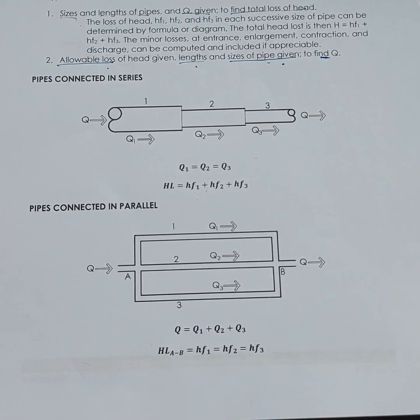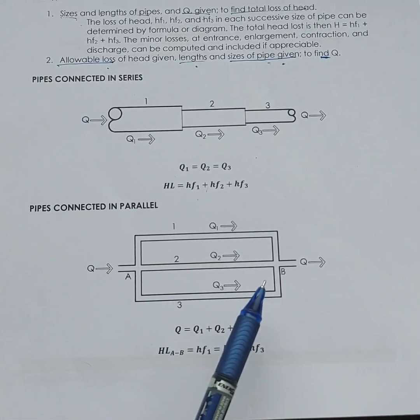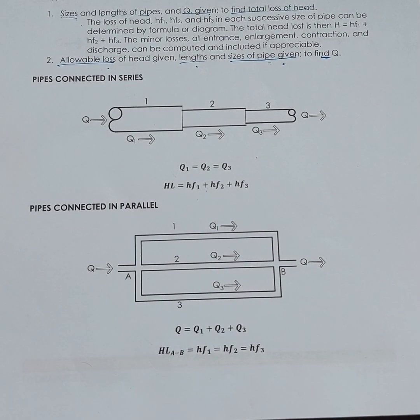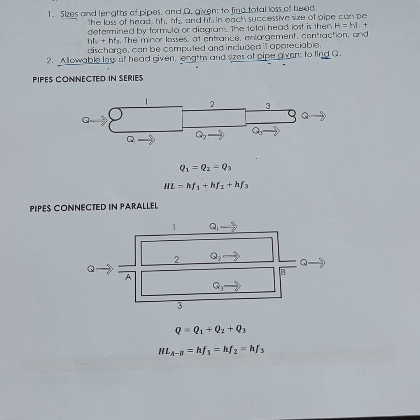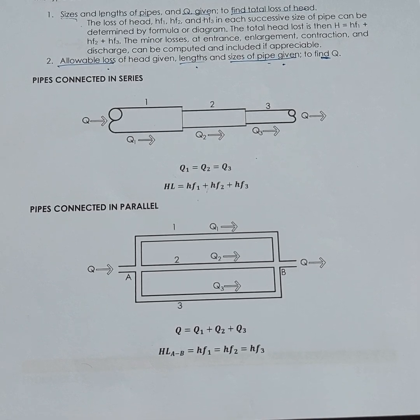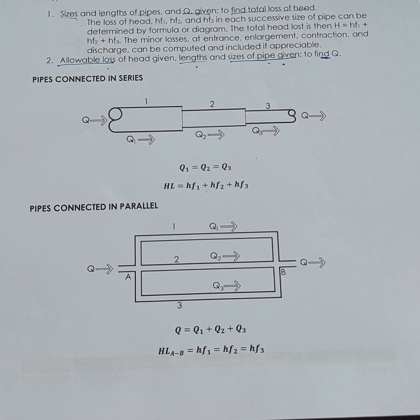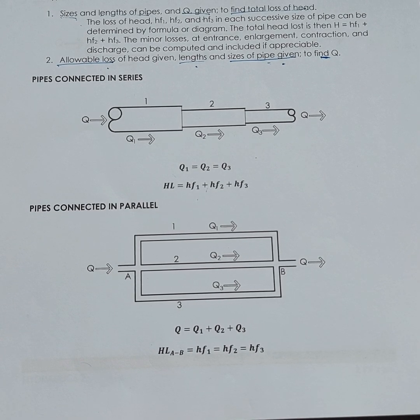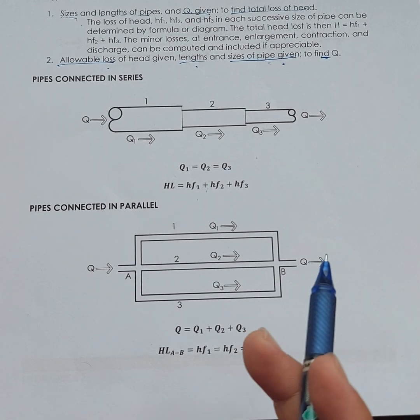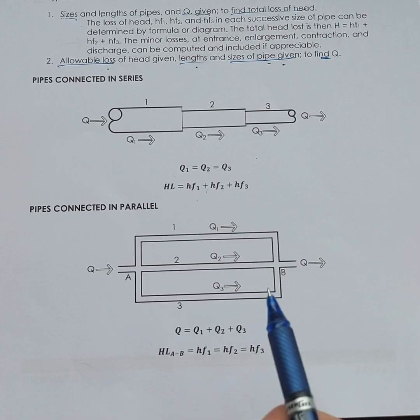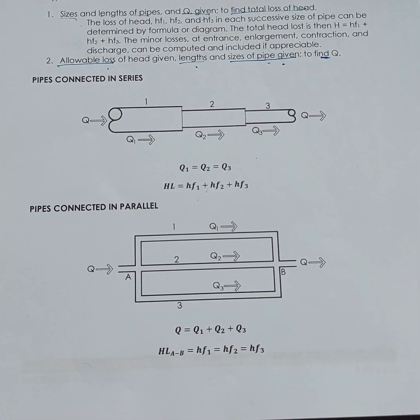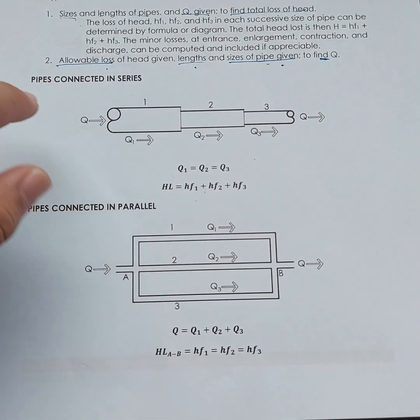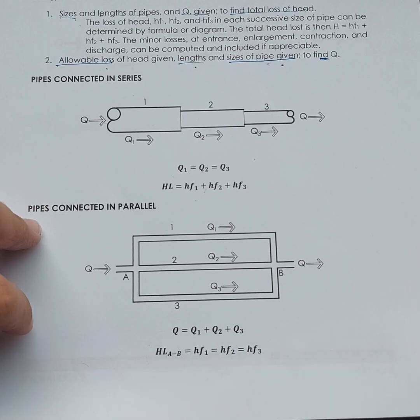So for example, mayroon tayong junction dito na mayroon tayong discharge dyan. It will be divided into three discharges. So basically the discharge in the entire system is simply the sum of the discharge at pipe 1 plus pipe 2 and then discharge at pipe 3. So that's the equation for discharge. And the total head loss is, the head loss from A to B, head loss from A to B, from one end to the other end of the connections, is equal to the head loss at pipe 1, head loss at pipe 2, equal to the end's head loss at pipe 3. So to solve for the head loss from A to B, from one junction to the other junction, you can just solve for the head loss in one pipe. Pwedeng pipe 1, pwedeng pipe 2, pwedeng pipe 3. So pare-parehas lang yan. So that's the difference between pipes connected in series and pipes connected in parallel.